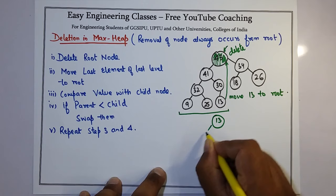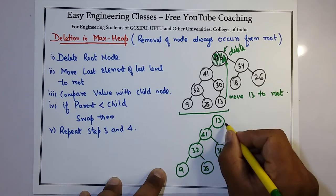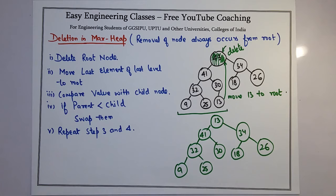13 now goes to the top. Then 41 here, 32, 9, 25, 30, 34, 18, and 26. Now we need to check if max heap property already holds. First, we check 13 and 41.